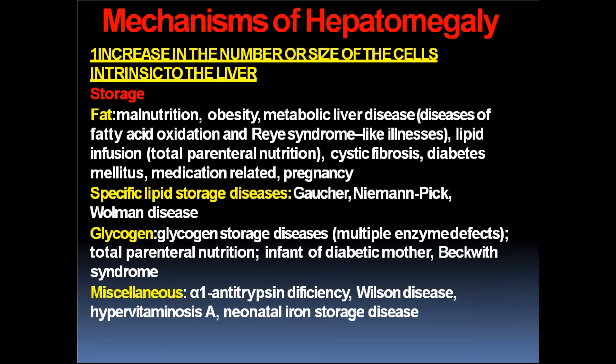Mechanisms of hepatomegaly: increase in the number or size of cells intrinsic to the liver — storage. First, fat storage: malnutrition can cause fatty liver, obesity, metabolic liver disease, fatty oxidation defects, Reye's syndrome, lipid infusion, total parenteral nutrition, cystic fibrosis, diabetes mellitus, medication-related causes, and pregnancy. All these can cause storage of fat in the liver and enlargement, which is called fatty liver.